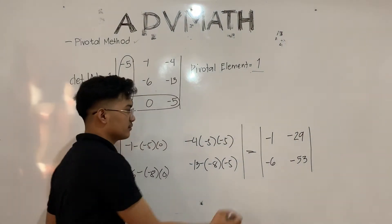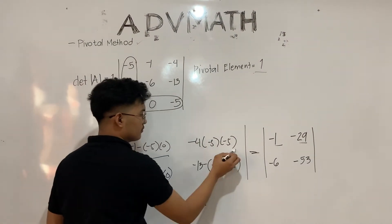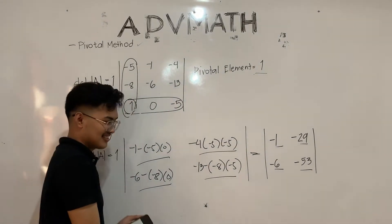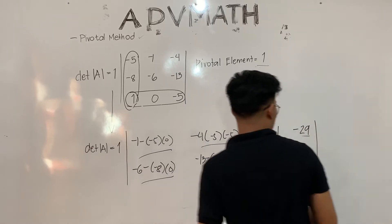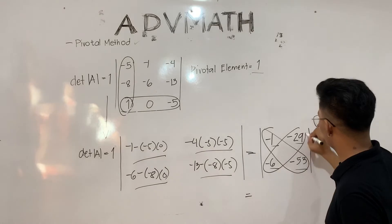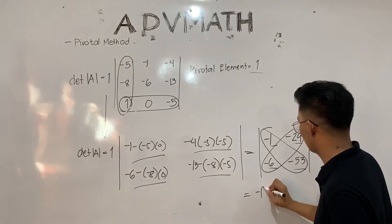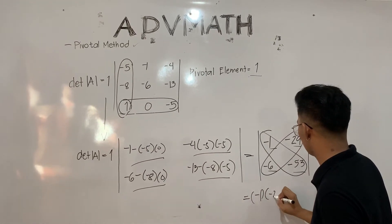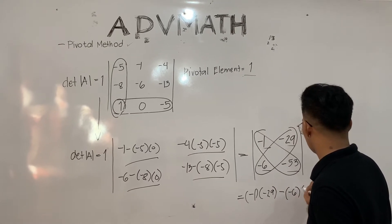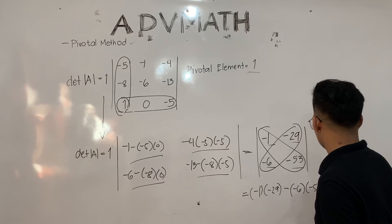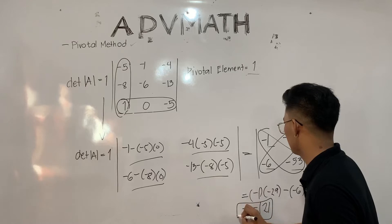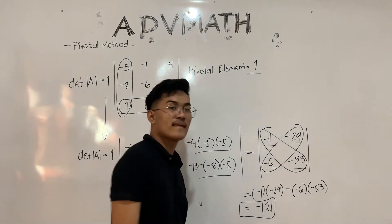As we simplify, we will get: negative 1, negative 6, negative 29, and negative 53. To get the determinant, we multiply A11 by A22 then subtract A12 by A21. The determinant of this matrix is negative 121.